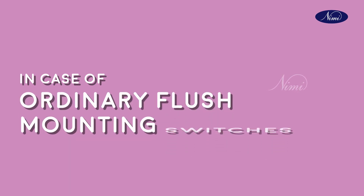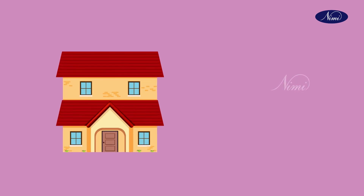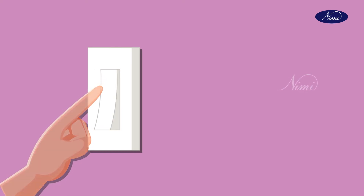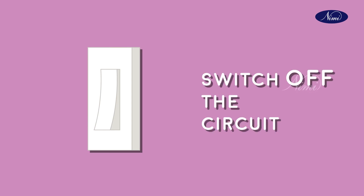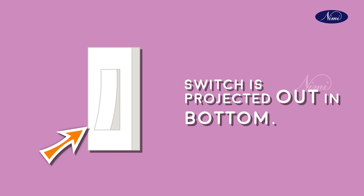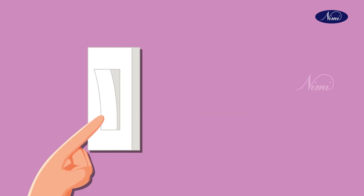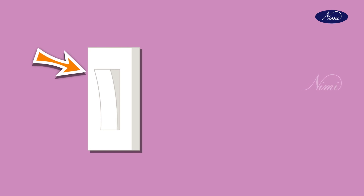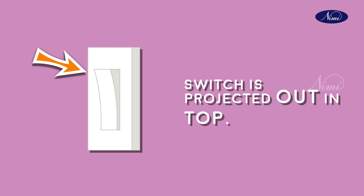In case of ordinary flush mounting switches — which we generally see in our households — pushing the switch to the upward position will make the circuit break, that means off condition. When pushing the switch to the upward position, the knob projection is on the bottom side. And pushing the switch to the downward position will make the circuit on. When pushing the switch to the downward position, the projection is outside on the top side.